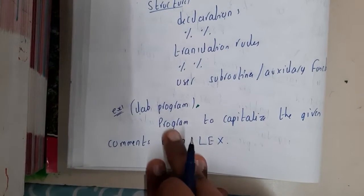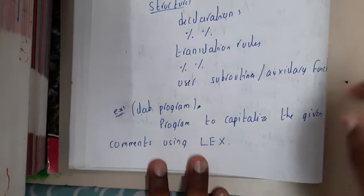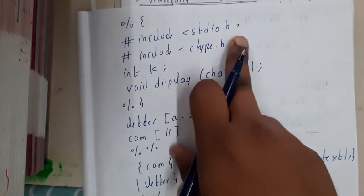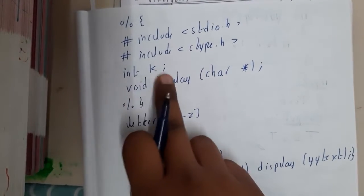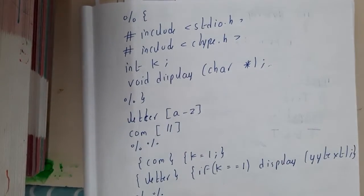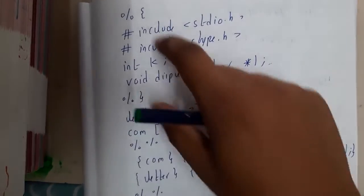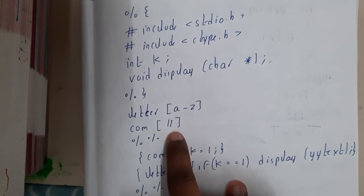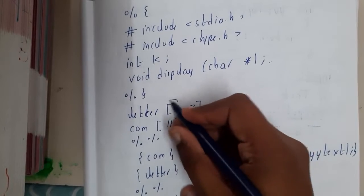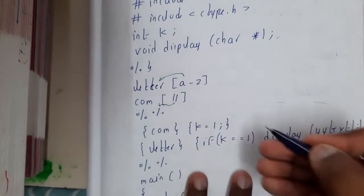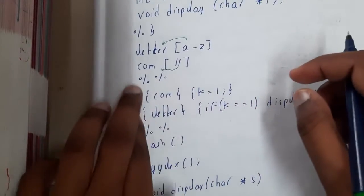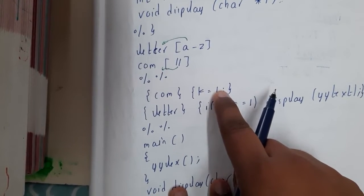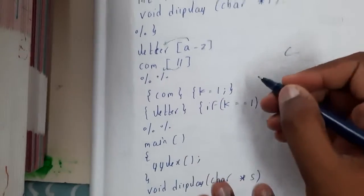This is our lab program: a program to capitalize given comments using Lex. You need header files: #include stdio.h and #include ctype.h. You also declare a function: int k; void display(char *s). Then you define letter as [a-z] and com (comment) as //. Inside the %% section, you write the translation rules: when com is matched, k is set to 1; when a letter is found and k equals 1, display(yytext) is called.